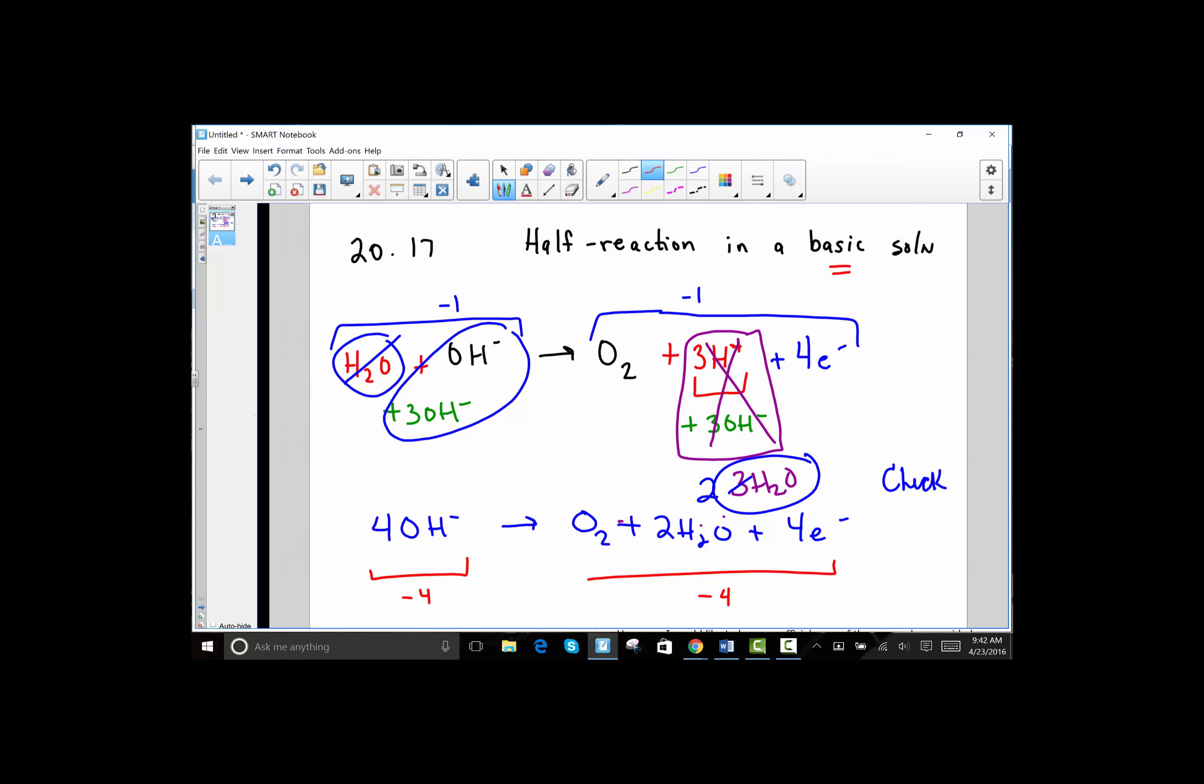We have balanced our redox reaction in a basic solution by adding hydroxides in the same quantity as the remaining protons after we've balanced the half reaction.